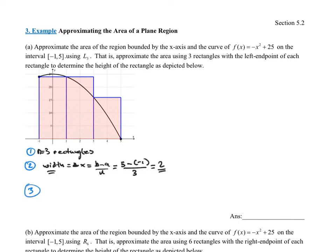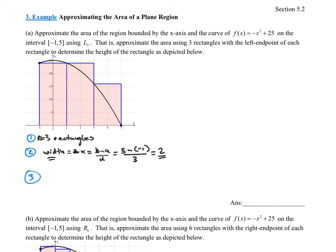The third thing we do is draw out a number line — this really helps us visualize what's going on. Mark the left endpoint and the right endpoint, and we need to break this into 3 equal-size rectangles, so I'm going to cut it twice. Always start with the left-hand side and add the width each time. Starting at negative 1, adding 2 gives 1; plus 2 gives 3; plus 2 gives 5. So the width of every single one of these spaces is 2.